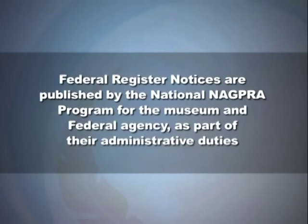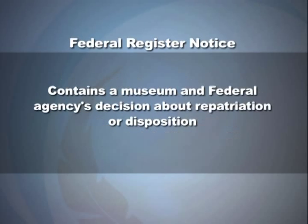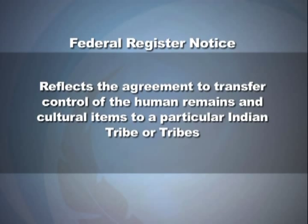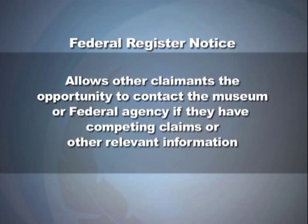The second difference is that Federal Register notices are published by the National NAGPRA program for the museum and federal agency as part of their administrative duties. A Federal Register notice contains a museum and federal agency's decision about repatriation or disposition, reflects the agreement to transfer control to a particular Indian tribe or tribes, and allows other claimants the opportunity to contact the museum or federal agency if they have competing claims. After the required 30 days following publication with no competing claims, you can go forward confident you have covered all NAGPRA requirements.